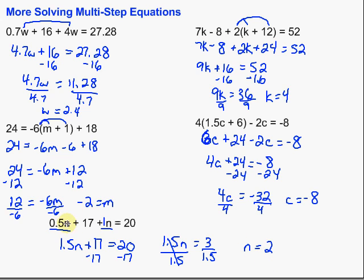Again, we could check it — pop that 2 back in for the n's in our original equation. Let's do it quickly: 2 times 1.5 gives us 1, then plus 17, that's 18, plus 2 would be 20. Sure enough, it works.